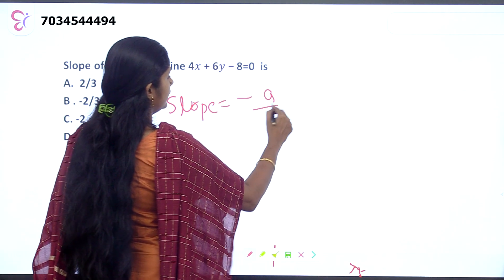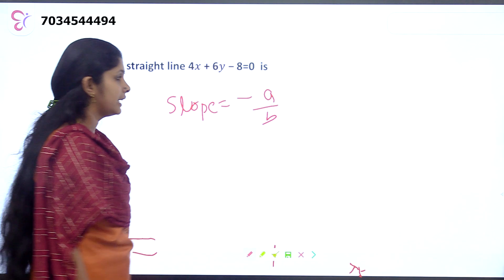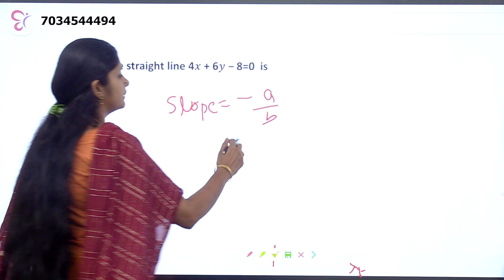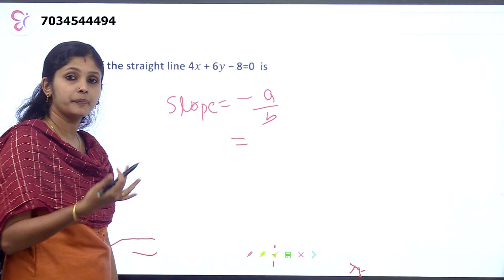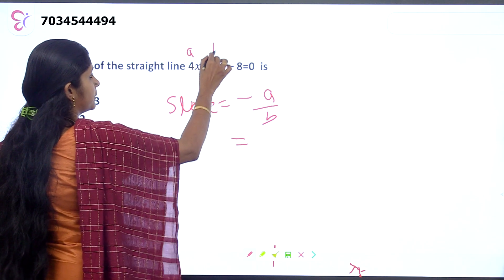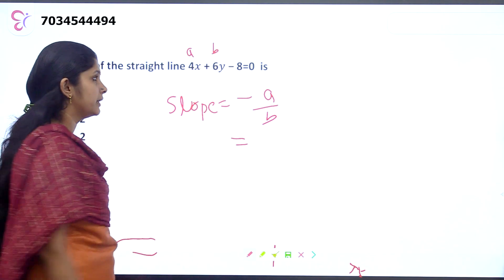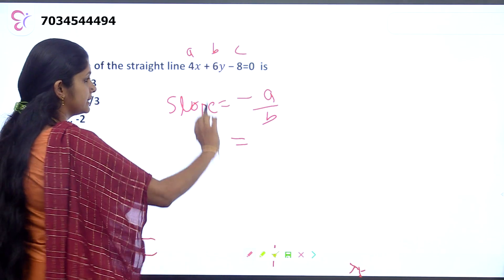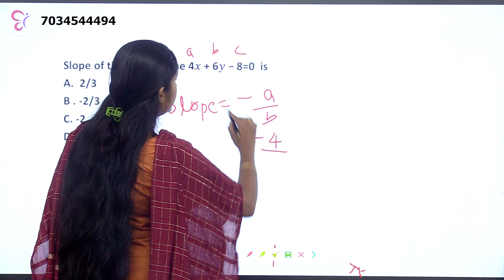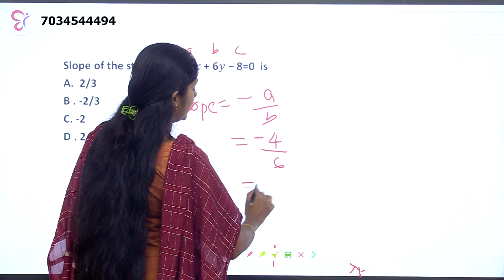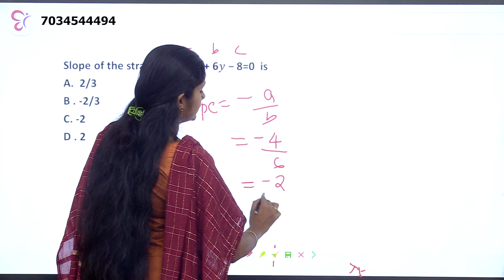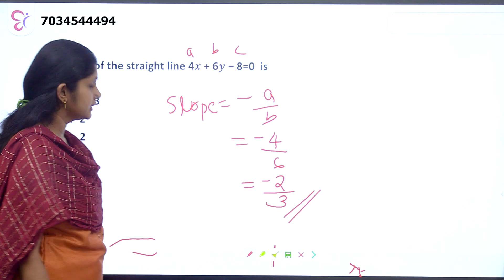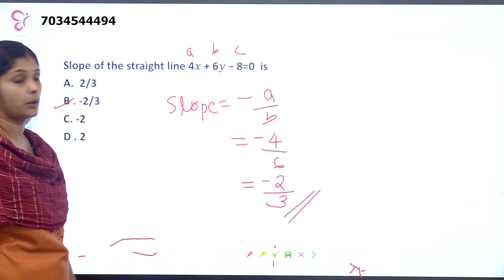The slope of a line in the form ax plus by plus c equals 0 is minus a by b. Here, the coefficient of x is a equals 4 and the coefficient of y is b equals 6. So the slope is minus 4 by 6, which simplifies to minus 2 by 3. The answer is option B, minus 2 by 3.